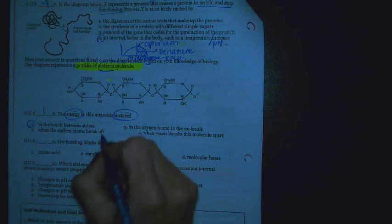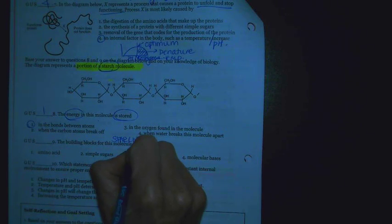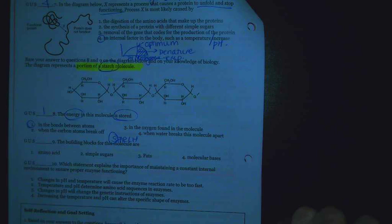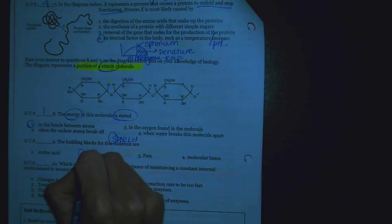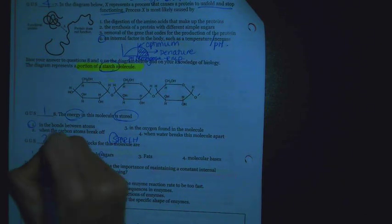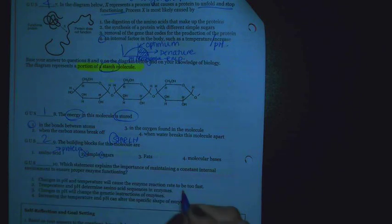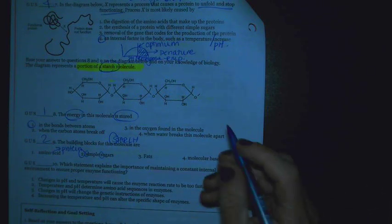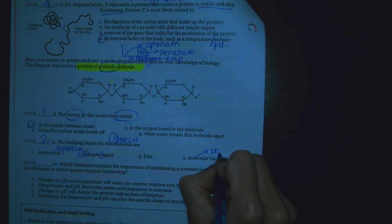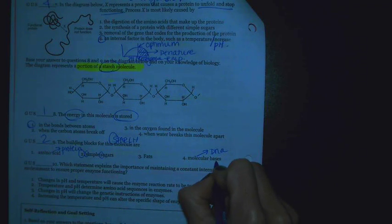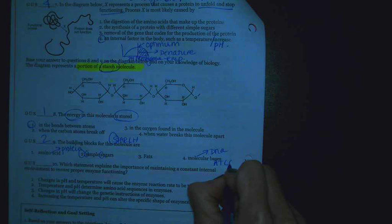Number 2 says, what are the building blocks of this molecule? What are the building blocks of starch? The building blocks of starch again are going to be simple sugars. So that's going to be 2. Remember, amino acids are going to be linked to proteins. Fats are actually a big molecule. And then molecular bases would be linked to DNA. Molecular bases include things like A, T, C, and G.